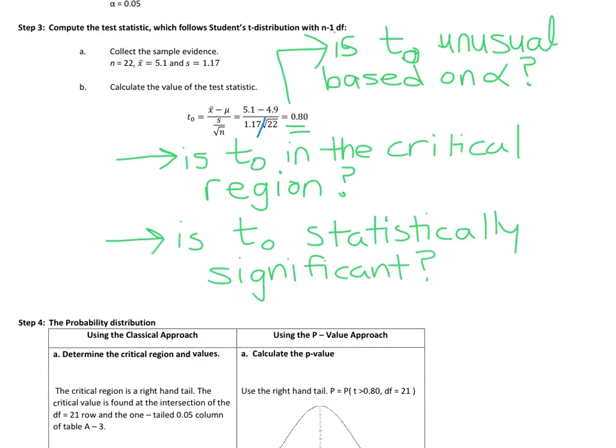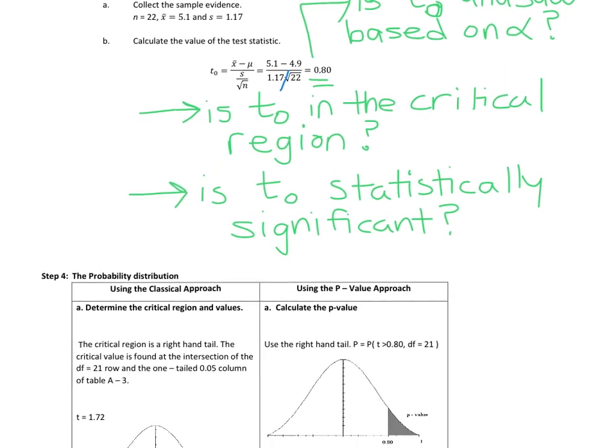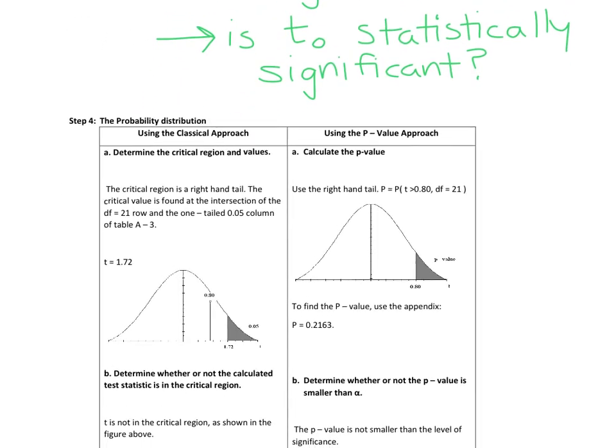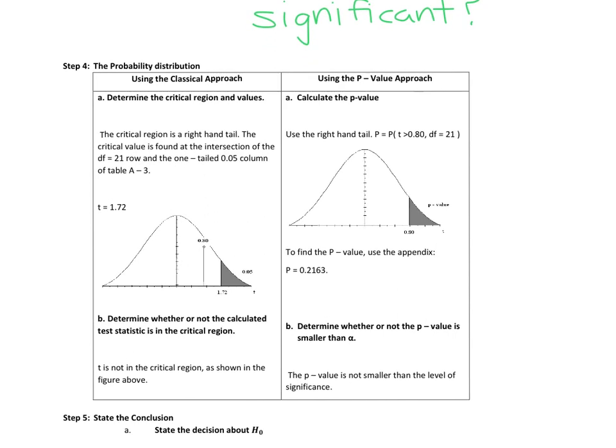So that's really what we're doing when we're running this hypothesis test. Let's carry on. Let's see how we're going to answer that question - how are we going to figure out if it is in the critical region? Just like we did in 10.2, we're going to use the classical approach or the p-value approach.